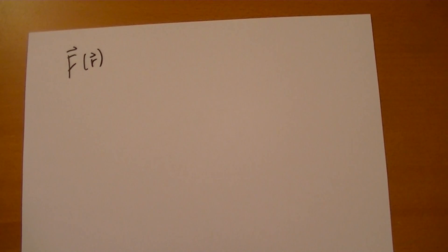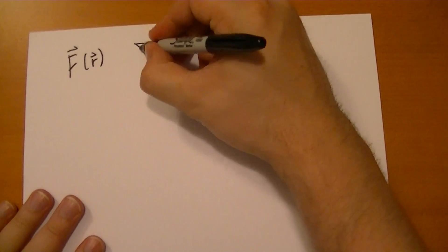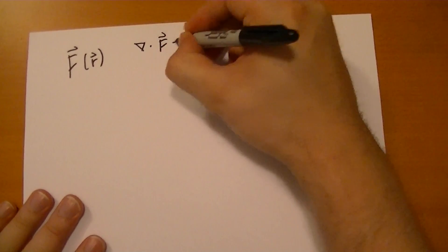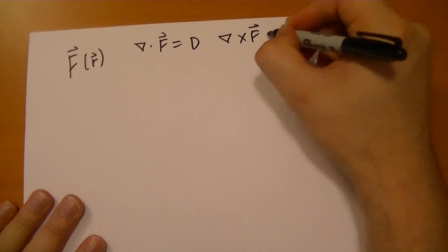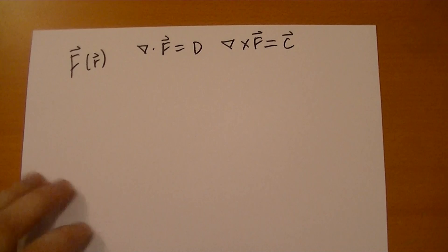You're not given the vector field itself, but you're given the divergence of the vector field, which is D, and you're given the curl of the vector field, which is C. That's also a vector field. Divergence is a scalar field.